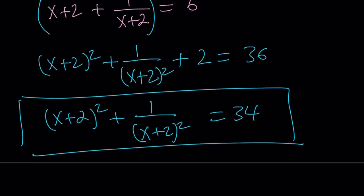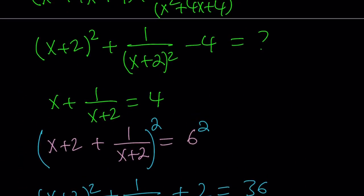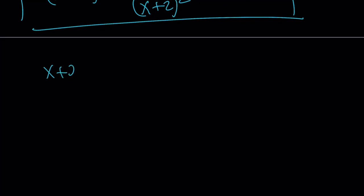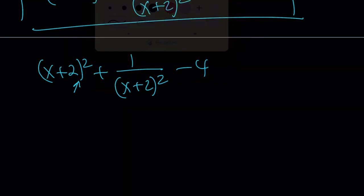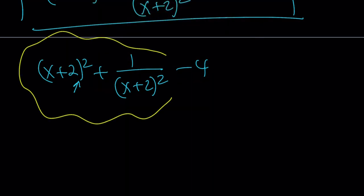So, I found the value of this, but is that what I'm looking for? Nope. I'm looking for this. Let me rewrite what I'm looking for. I'm looking for (x+2)² + 1/(x+2)² - 4. Remember, this minus 4 comes from the fact that we added a 4 here. So, they kind of balance out. But I know that this is already equal to 34. Wow. That's crazy, right?